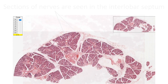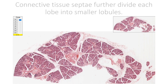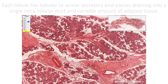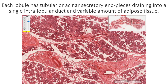Connective tissue septa further divide each lobe into smaller lobules. Each lobule has tubular or acinar secretory end pieces draining into a single intralobular duct, and the gland may also present a variable amount of adipose tissue.